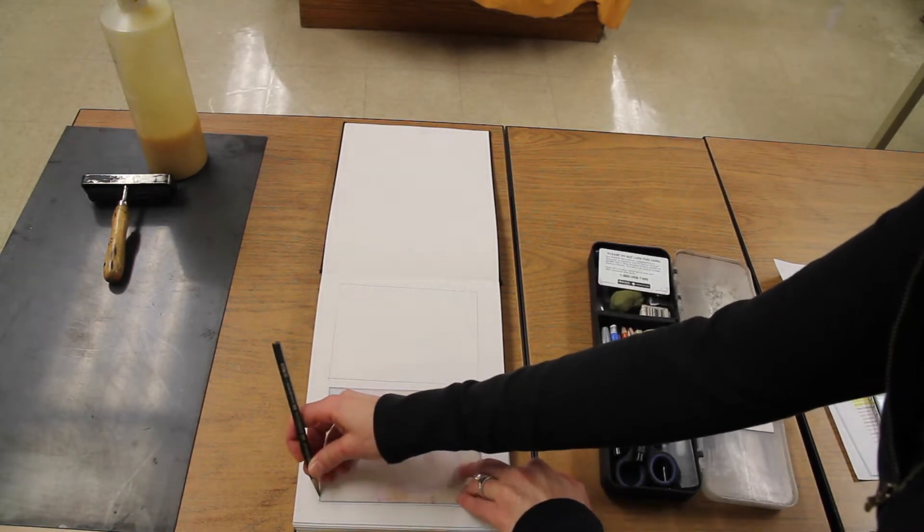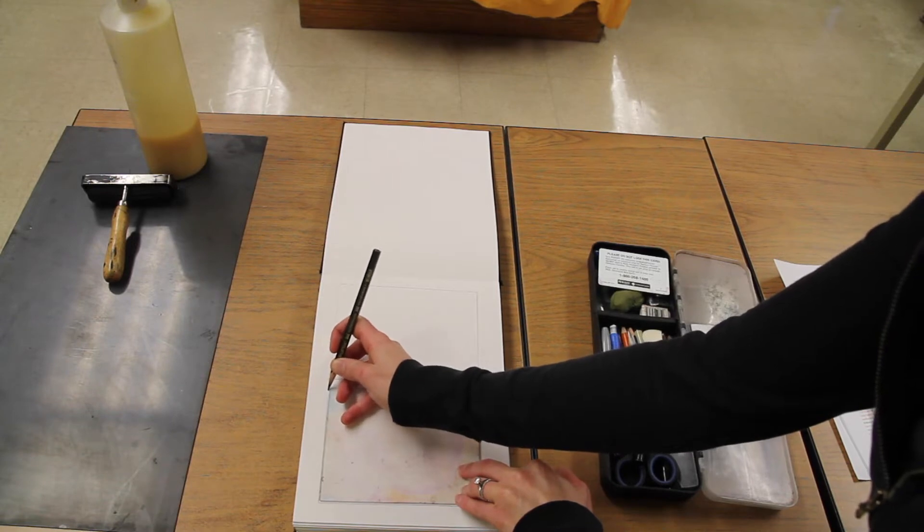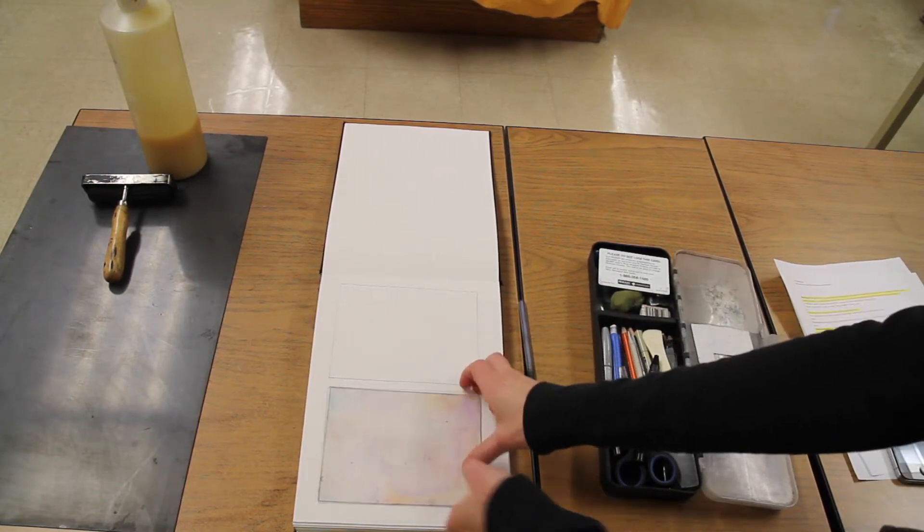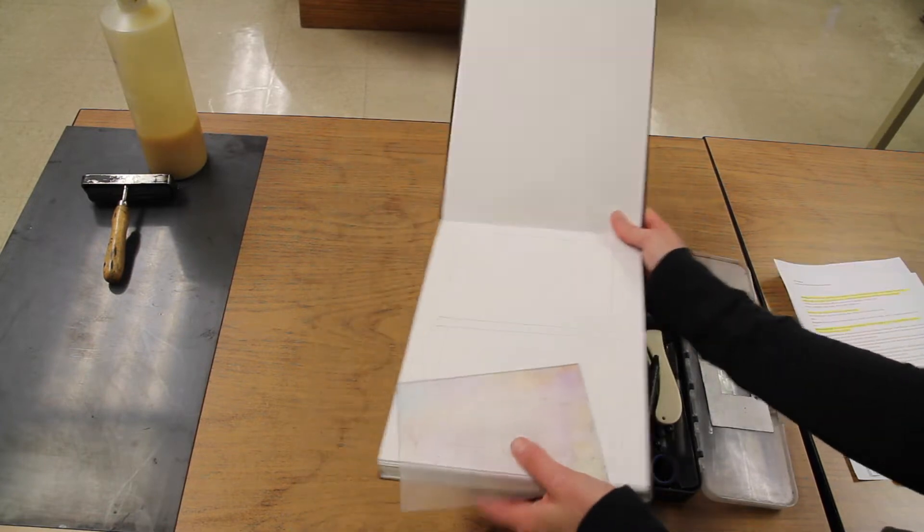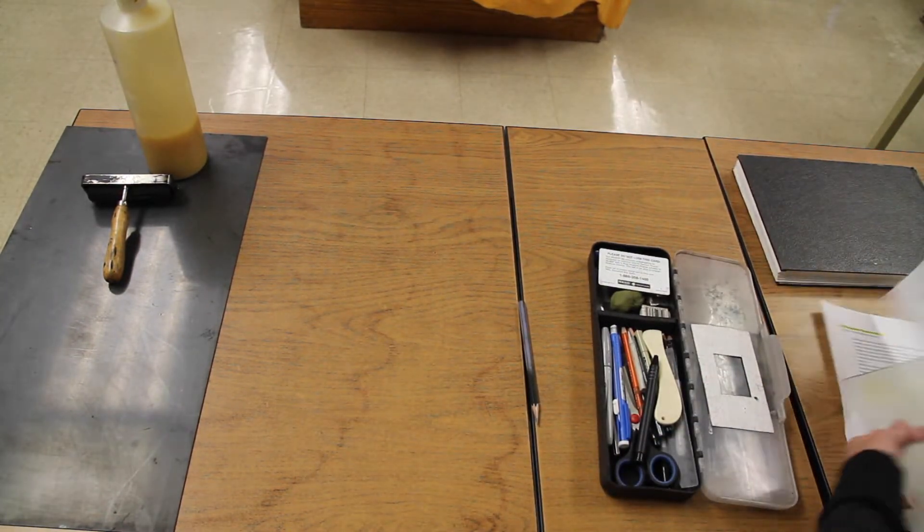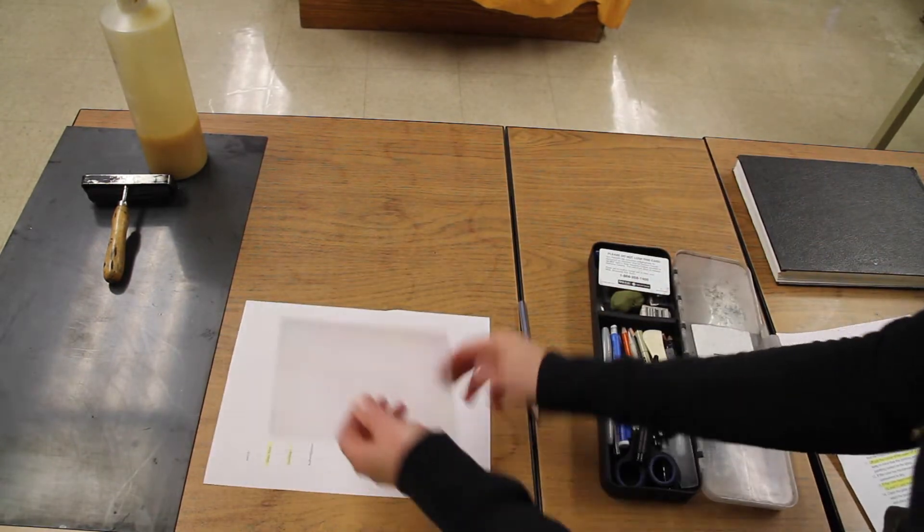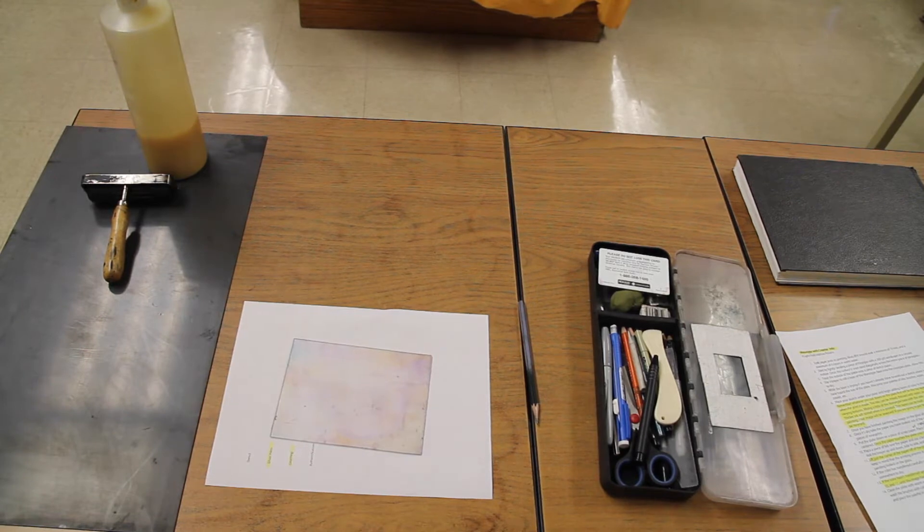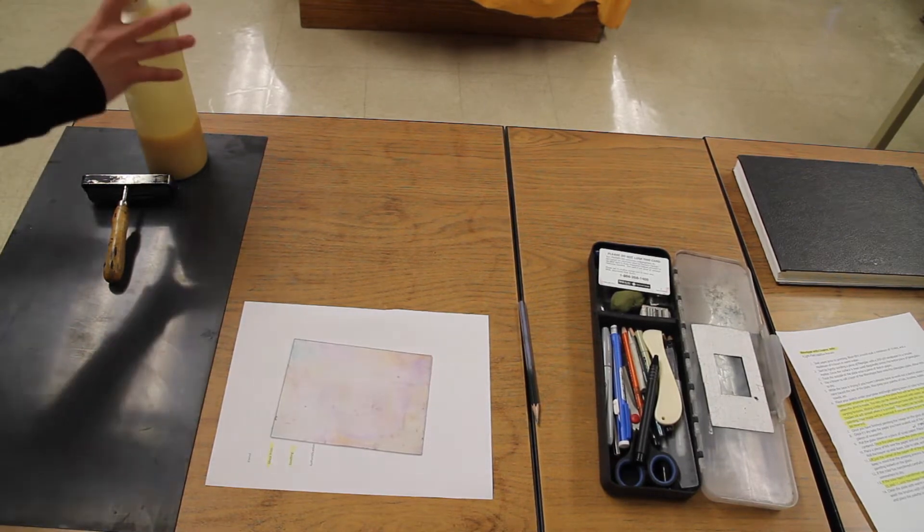The next thing I'd like you to do is coat your plate with some monotype base. I'm going to remove my sketchbook to the side, put down a piece of scrap paper and put my plate on top of it. I'm going to squirt some of the base onto this spreader plate.